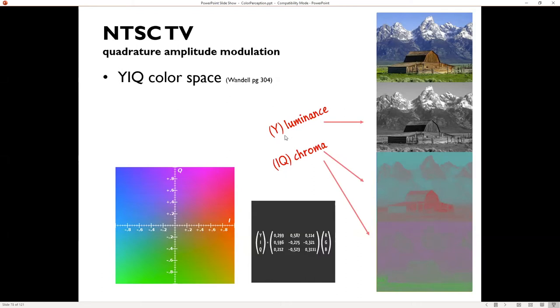So in YIQ and YUV and several others, this Y is luminance, meaning the black and white, the brightness of the image. And then the IQ is two channels, but collectively it's called the chroma. So we have luminance and chroma.